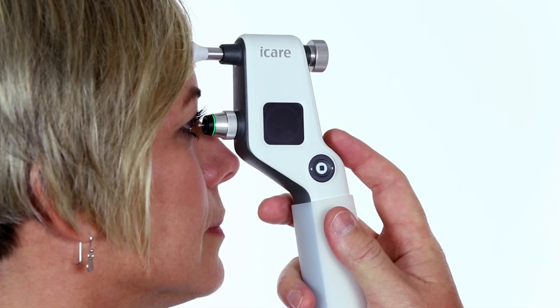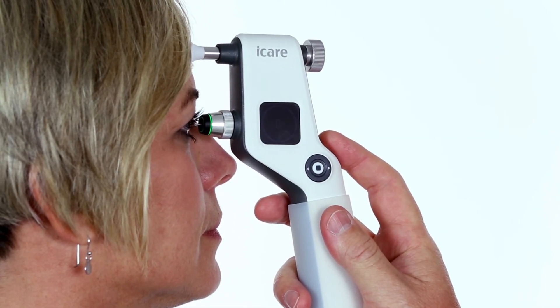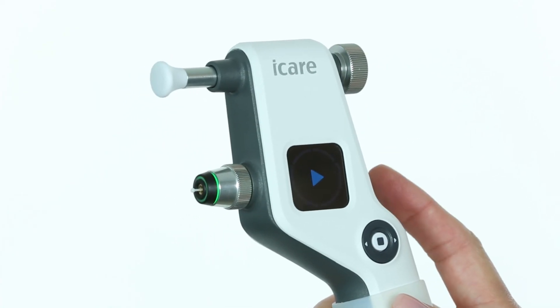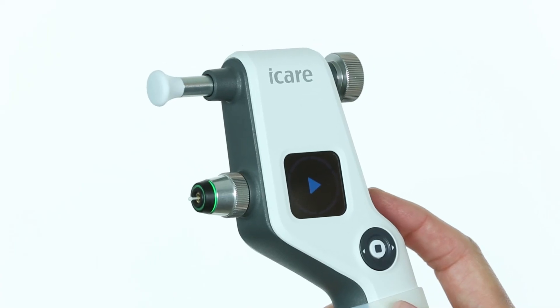For example, if you are too close to the cornea, the too-near error message will display, and the probe base light flashes red. Clear the error message by pressing the measure button once.